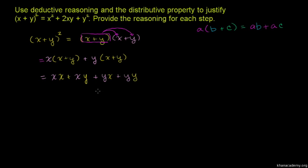Now we simplify: x times x equals x squared, x times y equals xy, y times x equals xy, and y times y equals y squared. Combining the middle terms, we get x squared plus 2xy plus y squared.